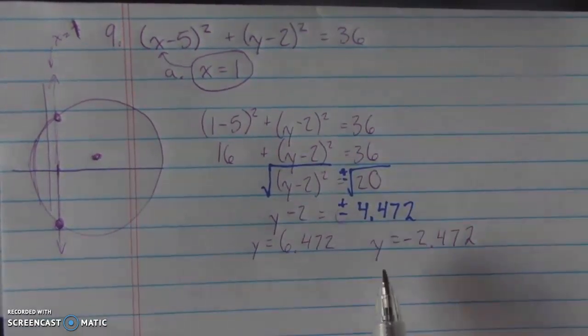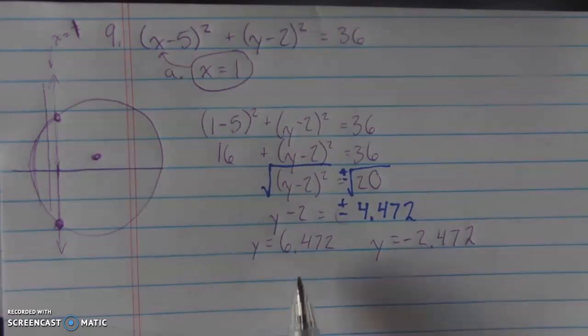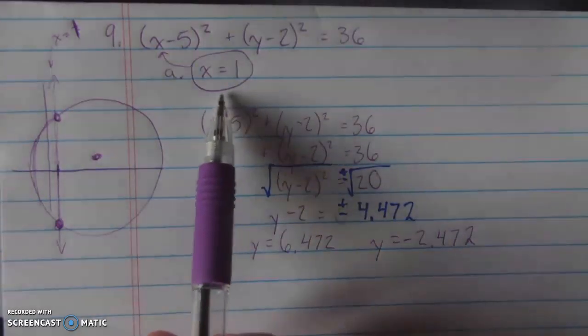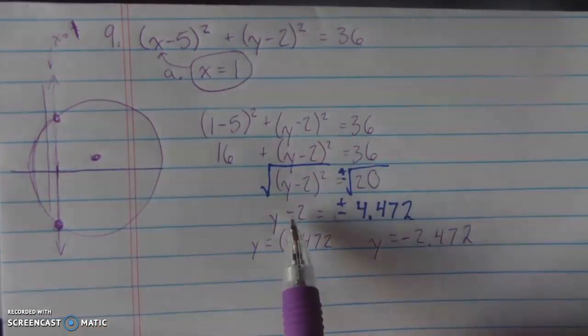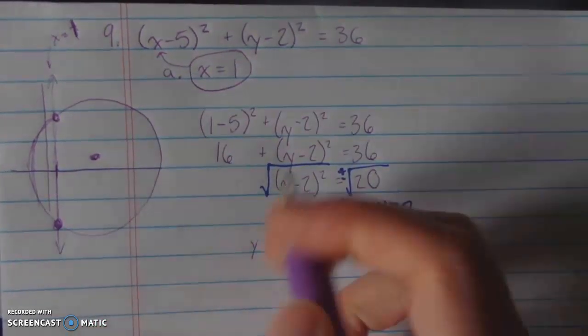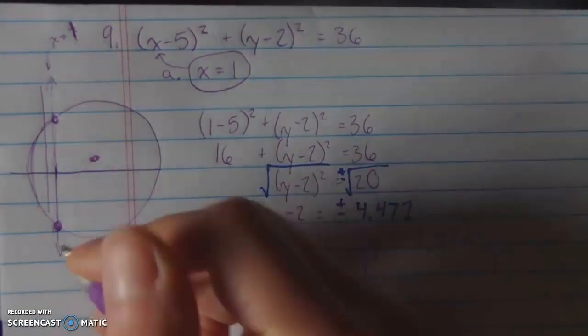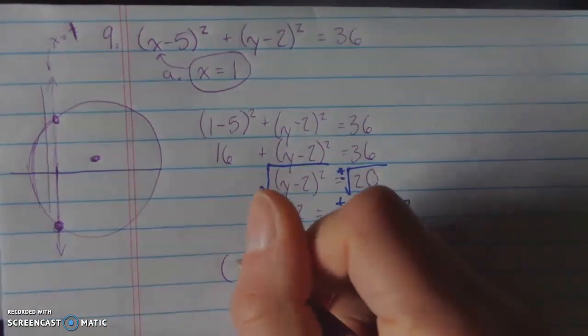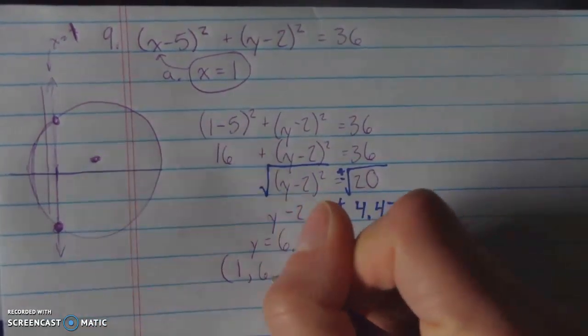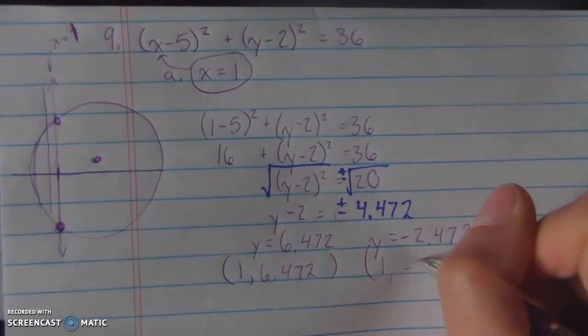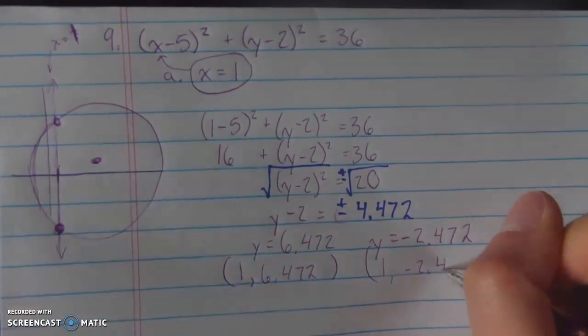But this still isn't a hard problem to solve, because all I have to do now is add 2 to both sides. I'm saying, what is a positive 4.472 plus 2? Well that's going to give me the y coordinate of 6.472. And for my second y coordinate, what I'm doing is I'm doing 2 plus a negative 4.472, and that's going to give me an answer of a negative 2.472. And here the question asks for what are the coordinates or what are the points of intersection. So we have the coordinate 1, 6.472, and 1, negative 2.472.